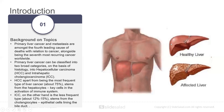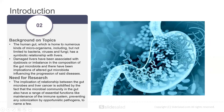Here we can see pictures of a healthy liver and an affected liver. The human gut is home to numerous kinds of microbes including, but not limited to, bacteria, viruses, and fungi. All of these microorganisms have a symbiotic relationship with the human body as a whole. Empirical evidence has shown damaged livers being associated with dysbiosis, or imbalance in the composition of gut microbiota, and there have been implications of altered gut microbiota influencing the progression of these diseases.